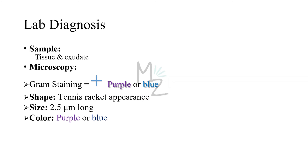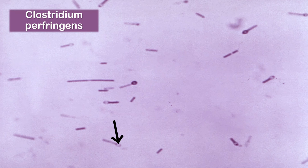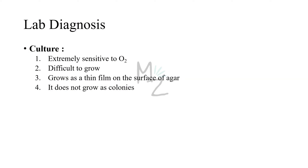Lab diagnosis uses samples of tissue and exudate. Tetanus is largely a clinical diagnosis based on patient presentation. Gram staining reveals gram positive bacteria, and microscopy reveals the characteristic shapes: tennis racket, drumstick, rod, or spores — confirming Clostridium tetani. The bacterium is 2.5 micrometers long and purple or blue in color. For culture, Clostridium tetani is extremely sensitive to oxygen as an obligate anaerobe, making culture difficult; it grows as a thin film on agar rather than normal colonies.